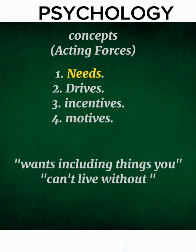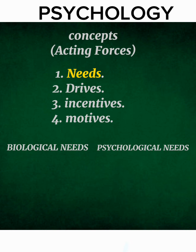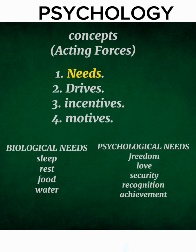Next, we'll talk about needs. In psychology, we define needs as wants — things that your body thinks it requires in order to survive. There are two types of needs: biological needs and social or psychological needs. Biological needs include things like sleep, rest, and food. Social and psychological needs include things like freedom, love, security, recognition, and achievement.